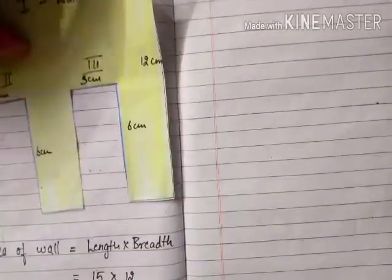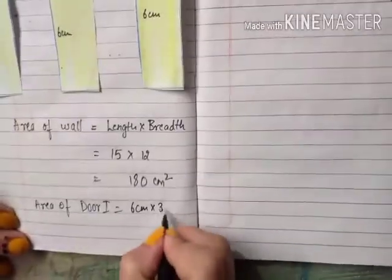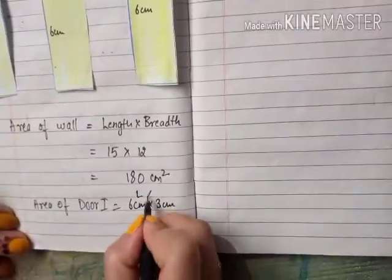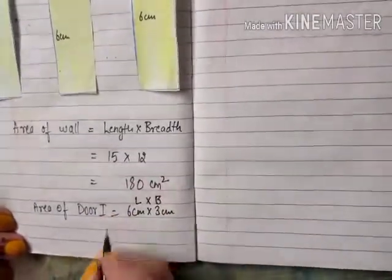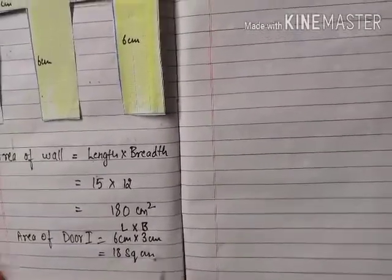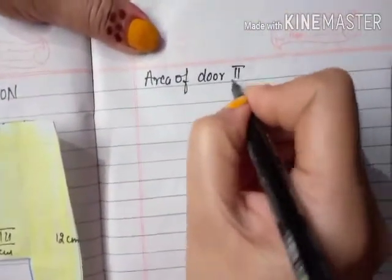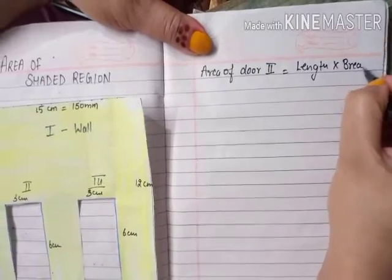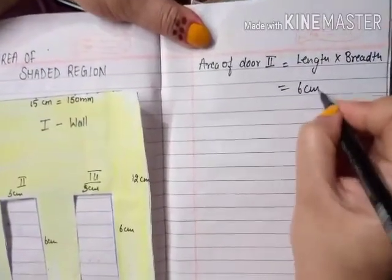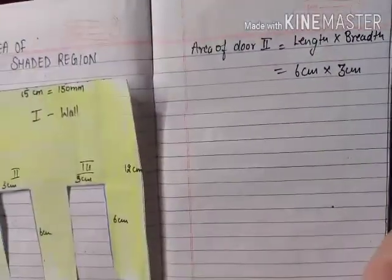We have to write it properly in math. Area of door one: length multiplied by breadth — always write it fully, don't use abbreviations. Length is 6 centimeters, breadth is 3 centimeters, so area of door one is 18 square centimeters. The area of door two is also the same: length multiplied by breadth — 6 centimeters multiplied by 3 centimeters — which is also 18 square centimeters.